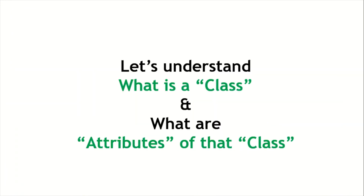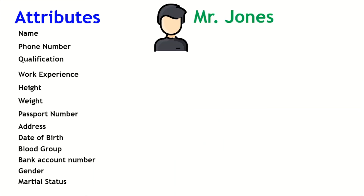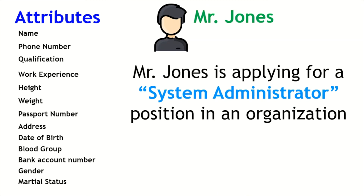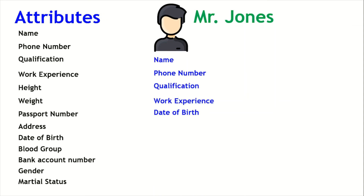Let's understand class and attributes with an example of Mr. Jones. His attributes could be name, phone number, qualification, work experience, height, weight, passport number, and so on. If Mr. Jones is applying for a systems administrator position, that organization doesn't require all attributes — only name, phone number, qualification, work experience, and date of birth. Those five attributes are mandatory for that position; the rest are optional.